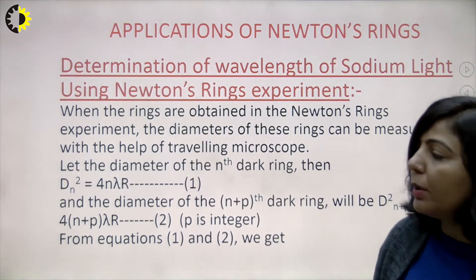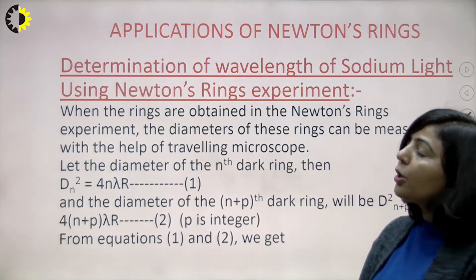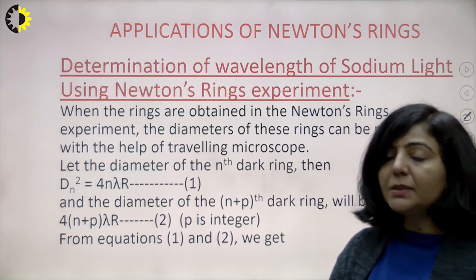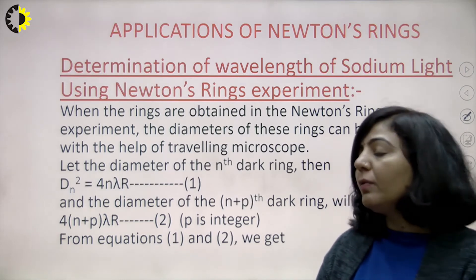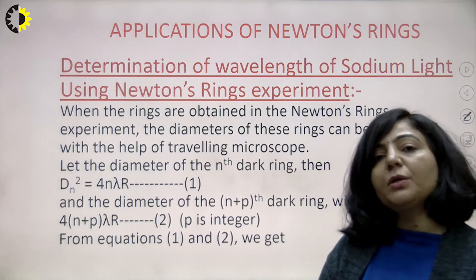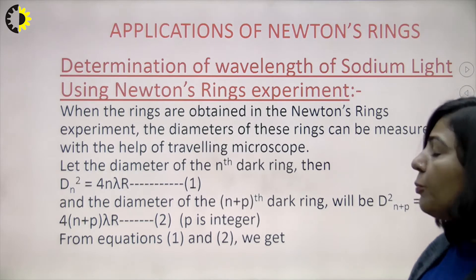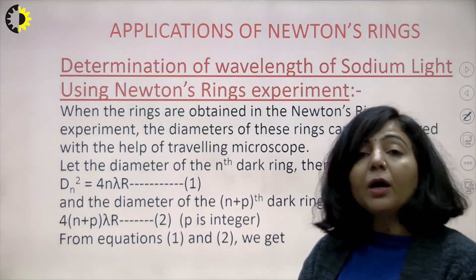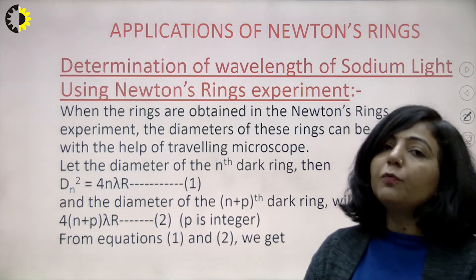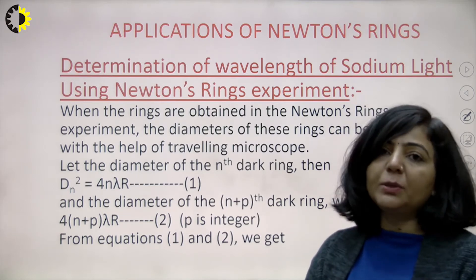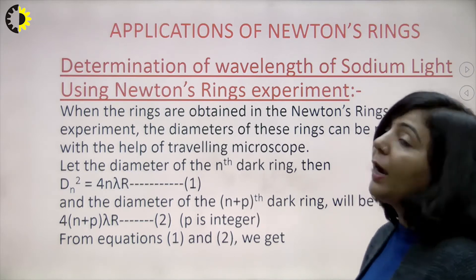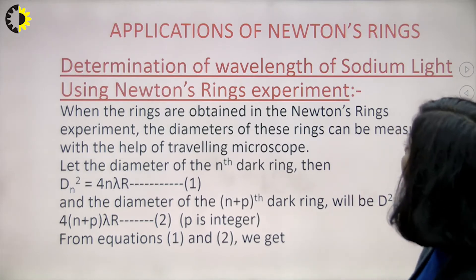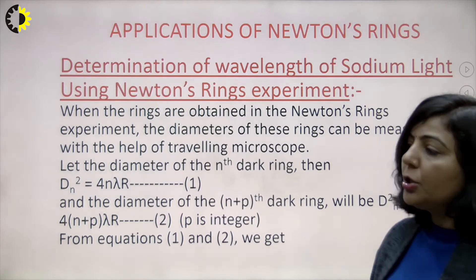Now I am going to start with the applications of Newton's ring experiment. Since Newton's ring experiment is based on the phenomenon of interference, it is used to calculate different parameters and has tremendous applications. For example, suppose you have a light source whose wavelength is unknown. Using this experiment, we can calculate the wavelength of that unknown source of light. That is the first major application: determination of wavelength of light using Newton's ring experiment.